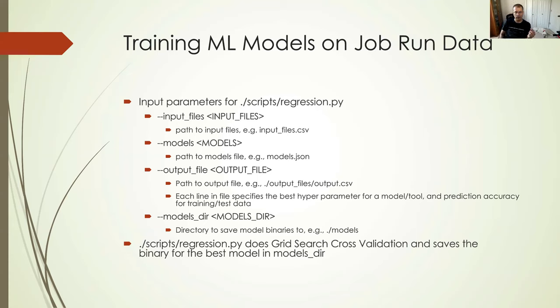The output file is a file that has, let's say we have two job run data that we want to train on, we have two models, so that combination would be four lines. Each line says what is the best hyperparameter for that model, for that job tool data, and what is the prediction accuracy on training and test data. This allows you to compare basically different models. You can look at the prediction accuracy and decide that. The regression script does a grid search cross-validation that's part of the scikit-learn library. It's going to save the binary for the best model in the models directory.